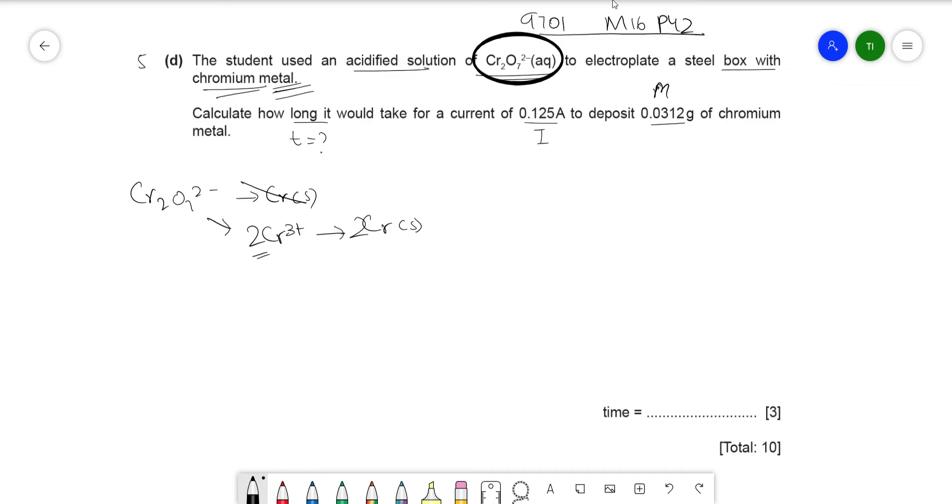So the way you'd approach this is first, calculate what's simple. So you calculate the moles of chromium metal that are deposited. So n equals m divided by Mr. So that's 0.03122 divided by 52, which will give you 6 × 10⁻⁴ moles of Cr metal, right?